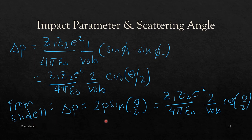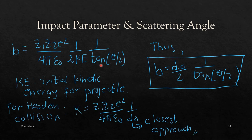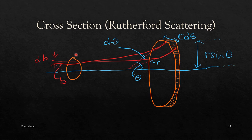Combining the two expressions for the change in momentum, we obtain the relationship between the impact parameter and the scattering angle. Your KE here refers to the initial kinetic energy of your projectile. For head-on collision, we can define the kinetic energy equal to this expression times 1 over D0, where D0 refers to the closest approach of the projectile with respect to the target. Thus, we can express your impact parameter B as equal to D0 over 2, times 1 over tan(theta/2), where theta is your scattering angle.